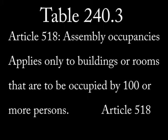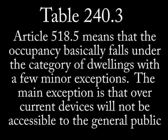Let's move on to assembly occupancies, which falls under article 518, and only when the occupancy exceeds 100 persons. The only reference to overcurrent in this section is article 518.5, which means that these areas will fall under the basic current codes already in place. Also note that the overcurrent devices for these premises will not be accessible to the general public.